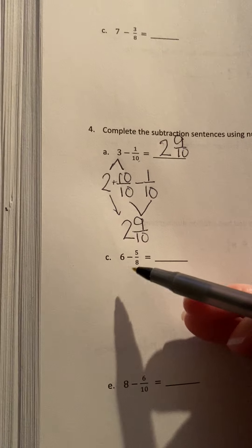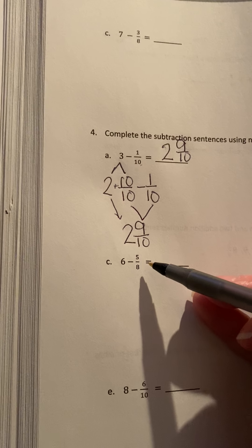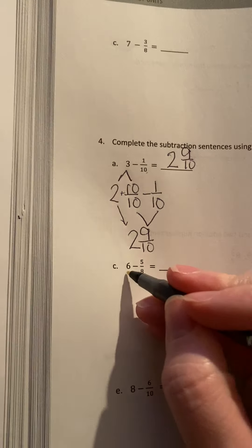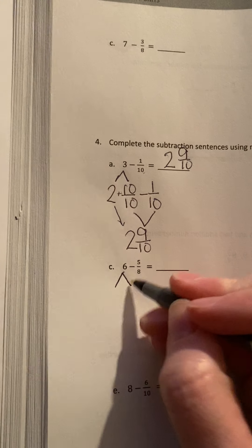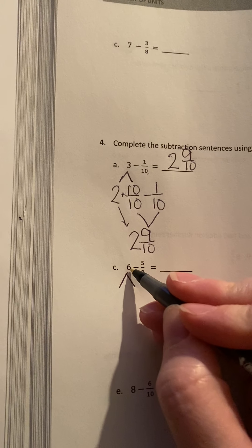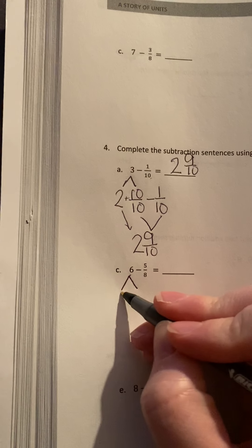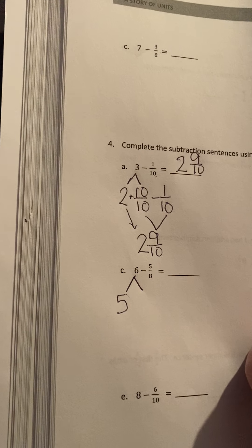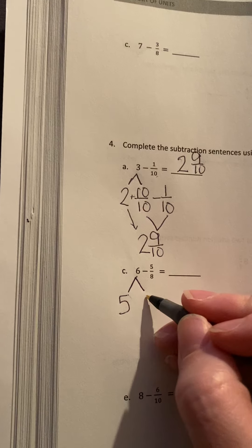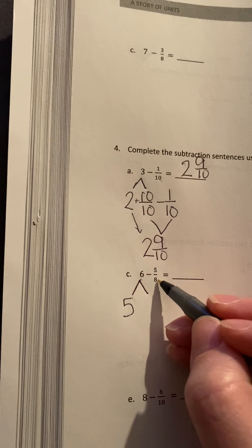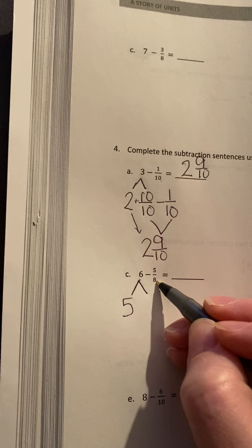So down here, I have 6 wholes minus 5 eighths. Well, I want to take out 1 whole. If I take out 1 whole, I have 6 minus 1 is going to have 5 wholes left over. And that 1 whole that I took out, I want to write it as a fraction. I want to keep this denominator that's in the other fraction though.